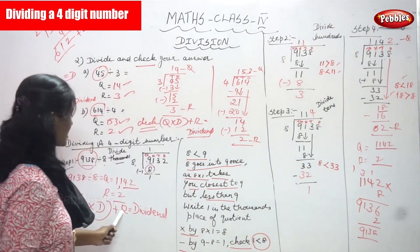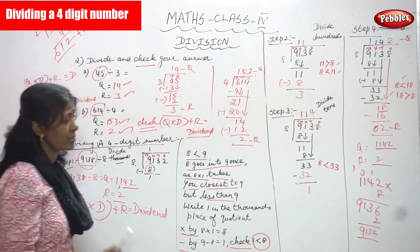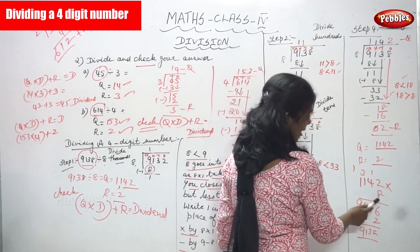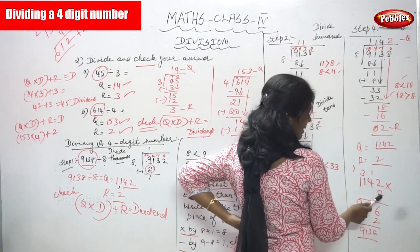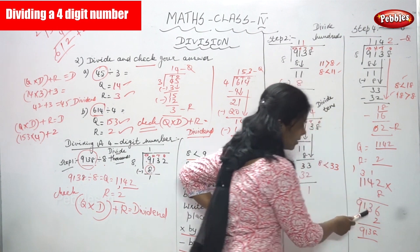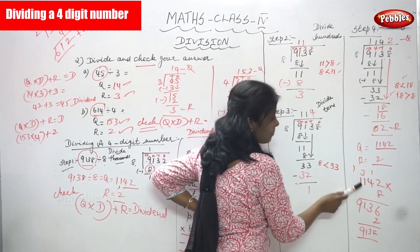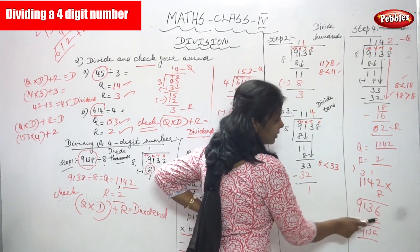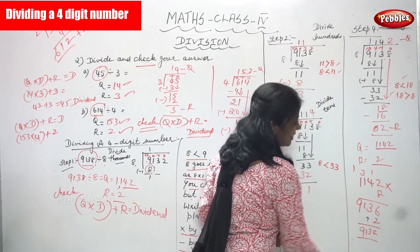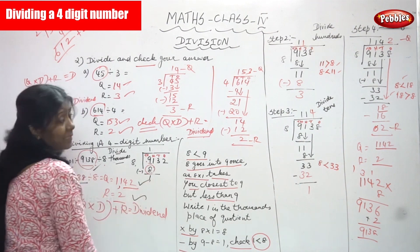Check method: quotient into divisor plus remainder equals dividend, meaning 9138. So 1142 into 8: 8 twos are 16, carry 1; 8 fours are 32, plus 1 is 33, carry 3; 8 ones are 8, plus 3 is 11, carry 1; 8 ones are 8, plus 1 is 9. Result is 9136. Add the remainder 2: 9136 plus 2 equals 9138. This is the right answer — quotient and remainder are both correct.